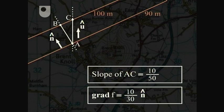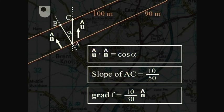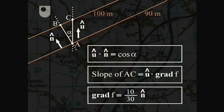The contour lines are parallel, so a, b, c form a right angle triangle. So a to b equals a to c times cos alpha, which means 30 equals 50 cos alpha. Also, u is a unit vector in the direction of a to c, so cos alpha is the dot product of the two unit vectors u and n. Putting all this together, we get the result that the slope of the path a to c equals u dot grad f. This is a general result showing how the slope of any path is related to grad f.